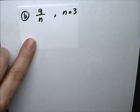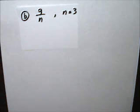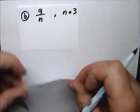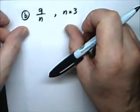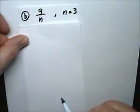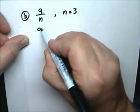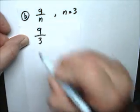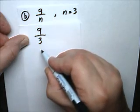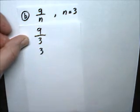Example B is 9 divided by N, when N equals 3. And so, again, it's often called substituting, and we have to think of the N as a 3. So, this becomes 9 over 3, or 9 divided by 3, and that answer is 3.